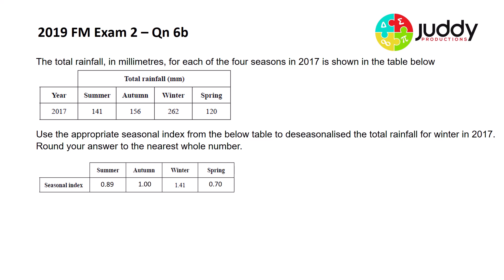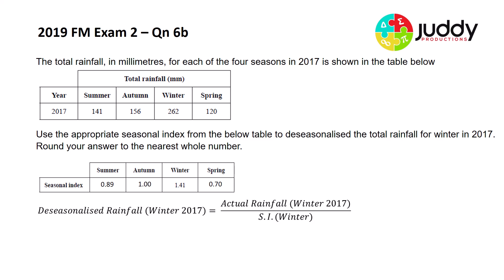Finally, question 6b. The total rainfall for each of the four seasons in 2017 is shown in the table. Use the appropriate seasonal index to de-seasonalize the total rainfall for winter of 2017, rounded to the nearest whole number. The actual rainfall in winter 2017 is 262 millimeters, divided by the seasonal index of 1.41, giving a de-seasonalized rainfall of 185.8 millimeters. Rounded to the nearest whole number, that is 186 millimeters.